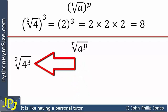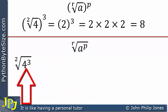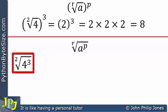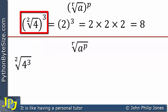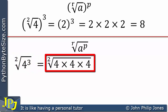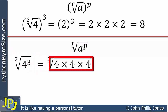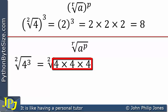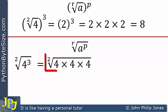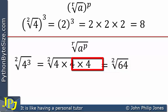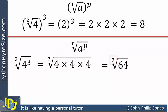Now consider the second approach using the same base of 4: this time we cube first and then take the square root. We expand 4 cubed within the root symbol as 4 times 4 times 4. Multiplying those together gives 64 within the root, and we're taking the square root — indicated by the small 2. The square root of 64 is 8.